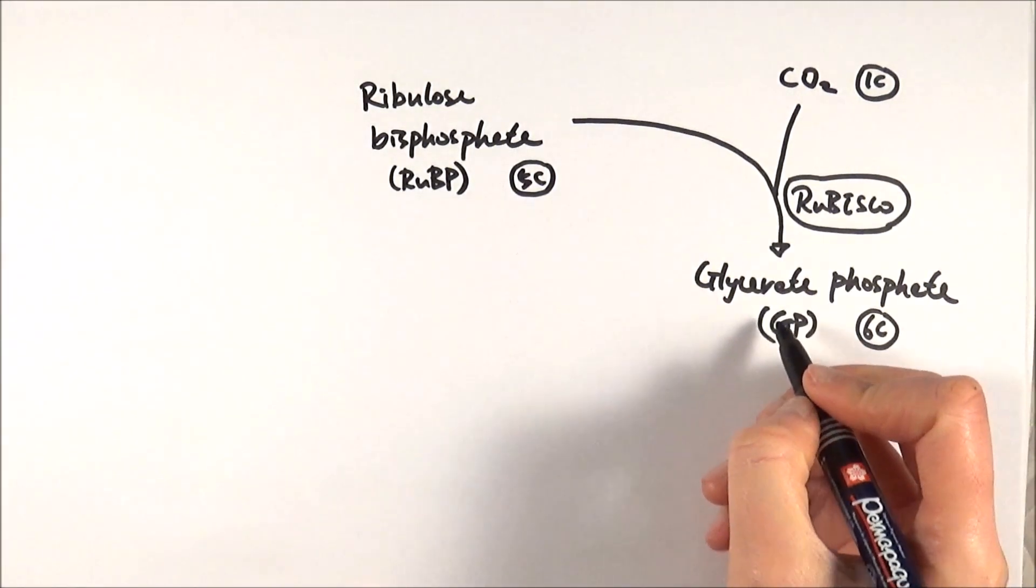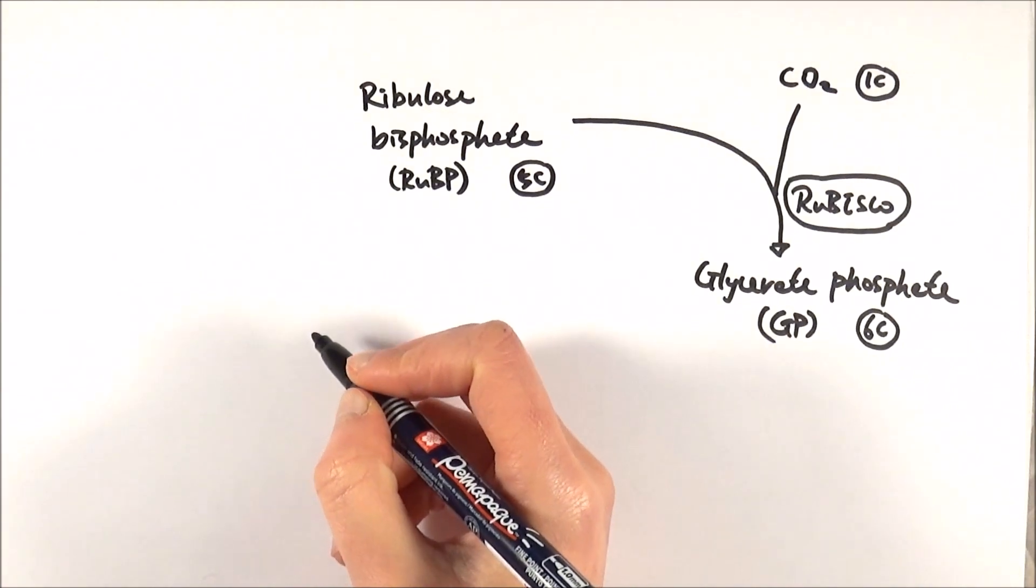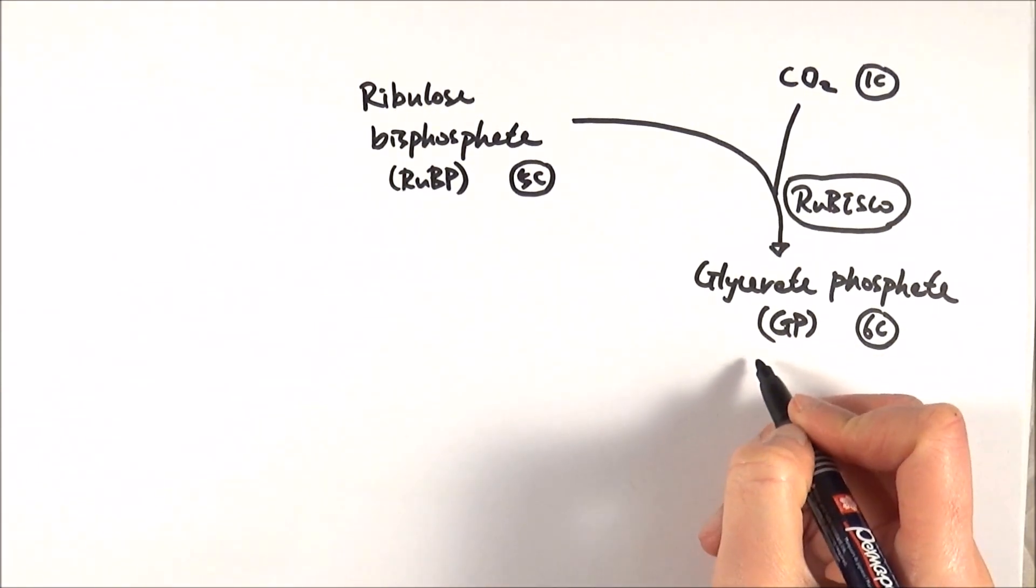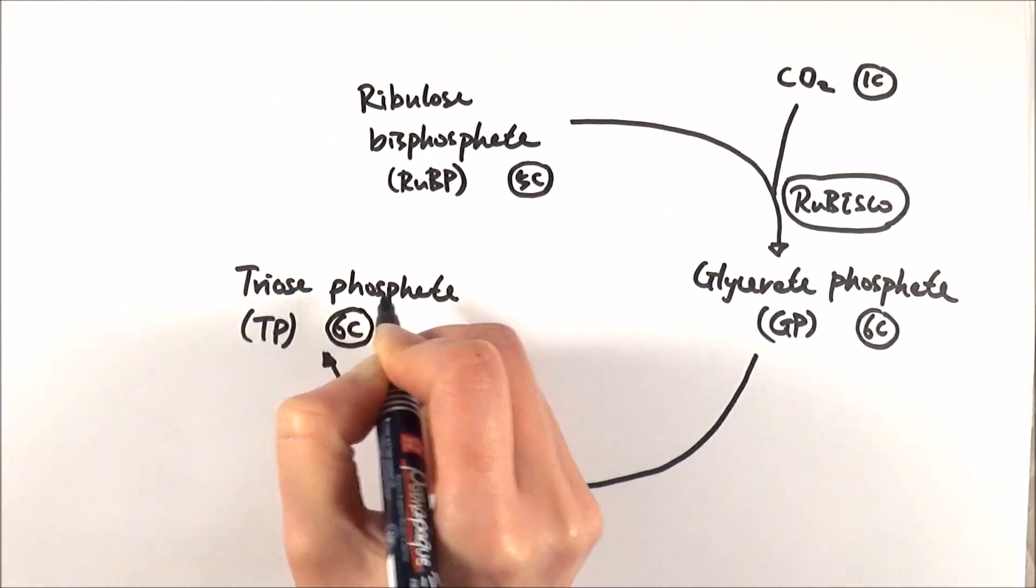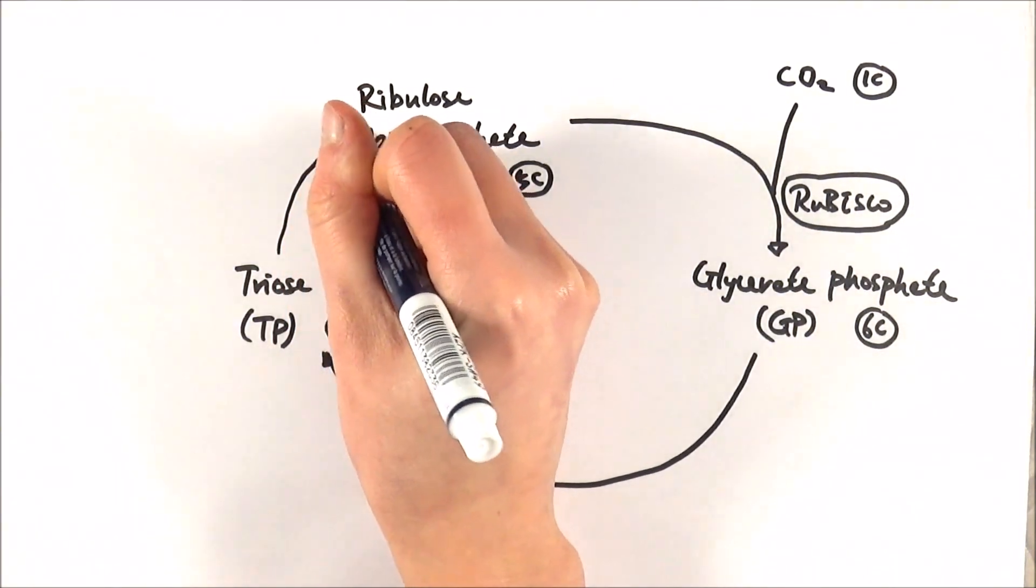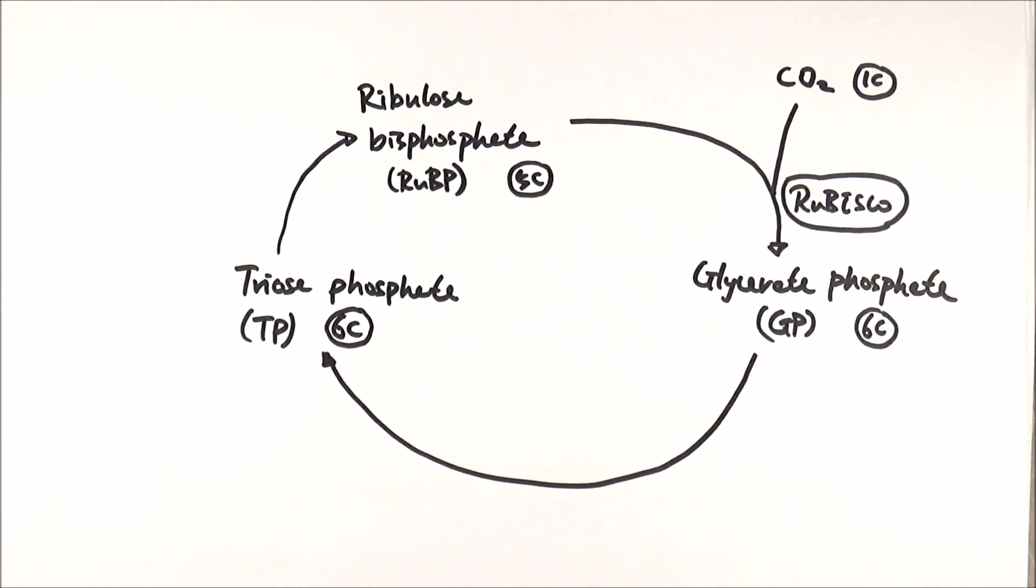Then after that, glycerate-phosphate can be converted into triose-phosphate, which is another six-carbon molecule. We can simplify it to call it as TP. And then finally, it will get converted back into RuBP. As you can see here, it is still a six-carbon molecule. However, the structure has been changed slightly.